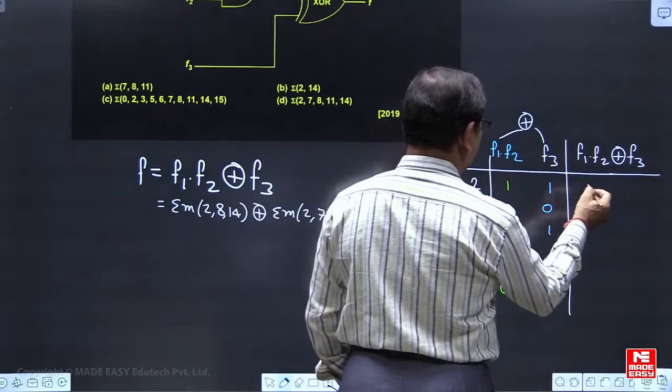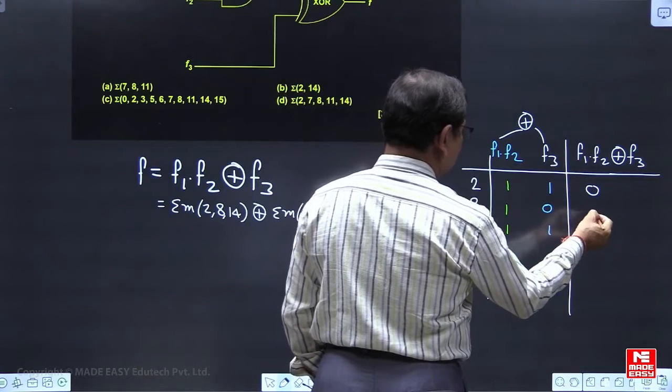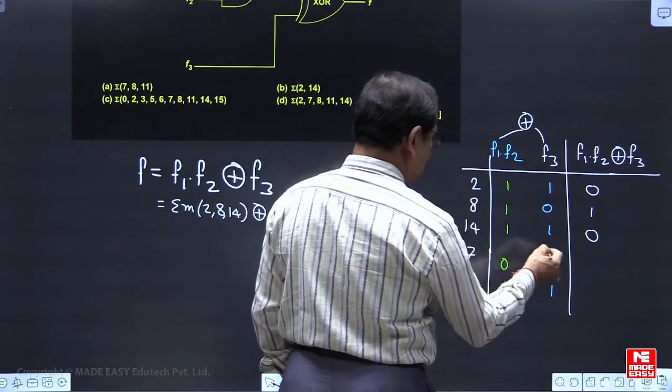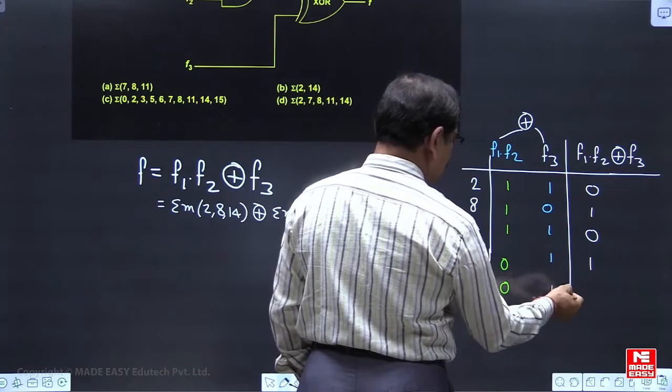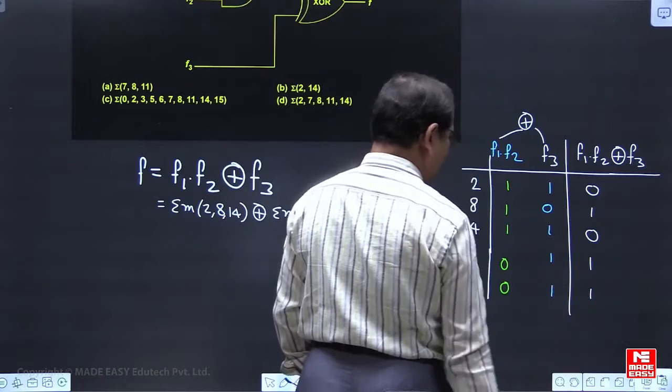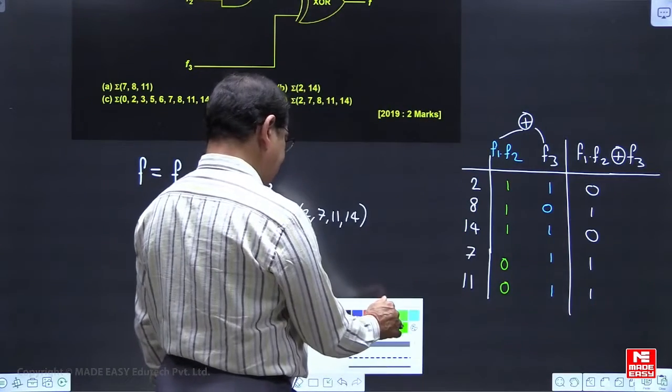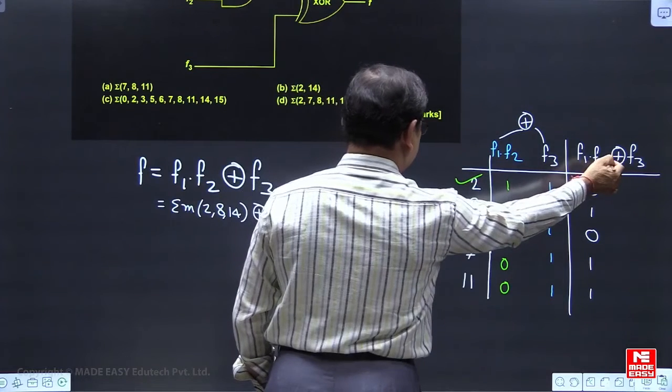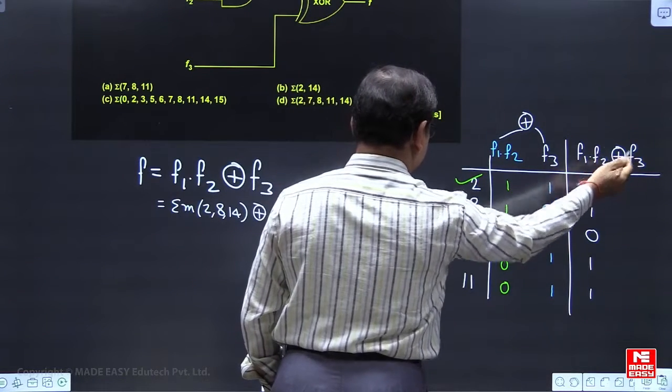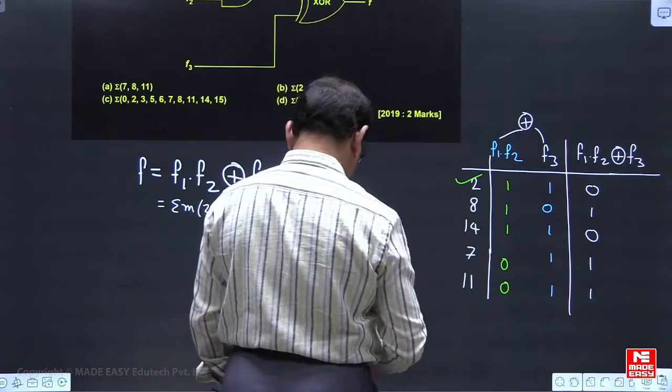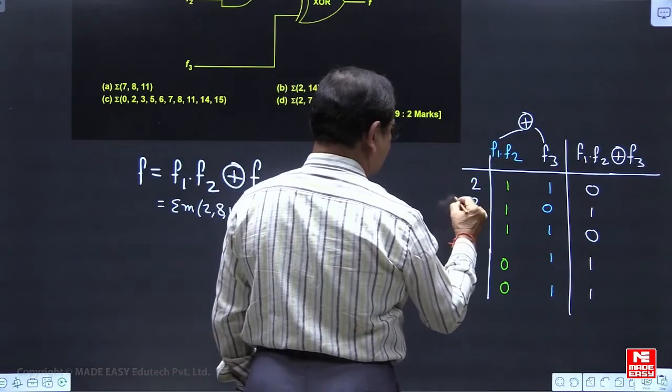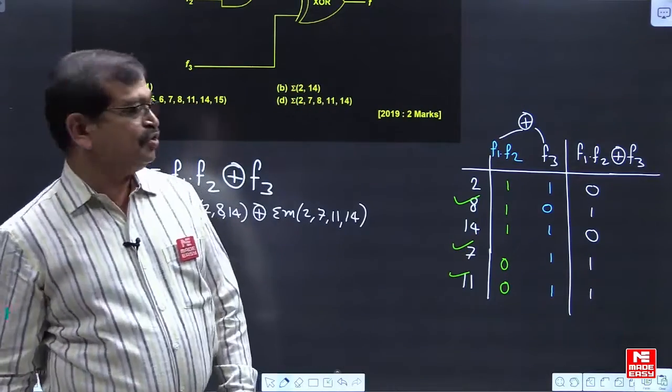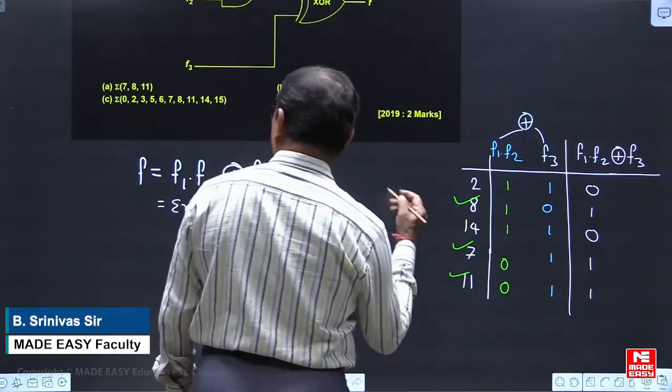1 exclusive OR with 1 will be 0. 1 exclusive OR with 0 is 1. 1 exclusive OR 1 will be 0. 0 exclusive OR with 1 will be 1. So we are looking here. The minterms for this function f1 AND with f2 exclusive OR with f3. The minterms will be this 8, this 7 and 11. So 7, 8 and 11 are the minterms.